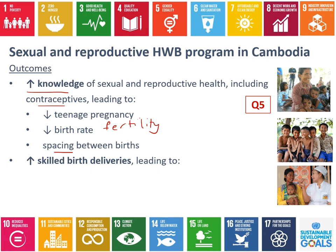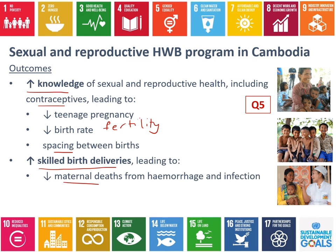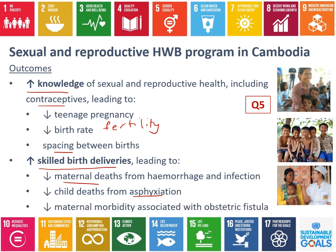Improving knowledge also made people more likely to have a skilled birth delivery - more likely to attend a clinic or have a midwife involved. That's really important for decreasing maternal deaths from things like hemorrhage or infection in unsanitary conditions. It also decreases child deaths, particularly from asphyxiation if there's an obstructed labour, and decreases maternal morbidity associated with obstetric fistula, which occurs with obstructed labour and can cause ongoing issues with continence - urinary or fecal incontinence - creating a really big impact on someone's life. So these are some very effective outcomes from a very simple program.